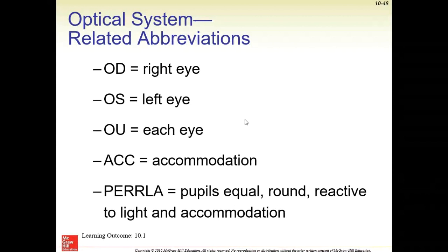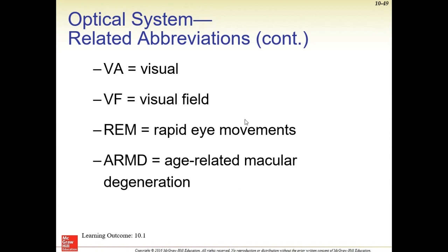Different abbreviations are used in eye documentation — probably from Latin. This is how sometimes visual exams are documented. Our patients seeing an ophthalmologist might have this documented: right eye, left eye, accommodation, PERLA — that's part of an exam a doctor might do on the body systems.